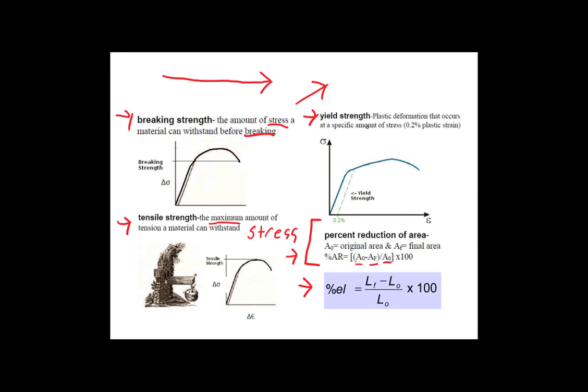Our next definition is yield strength. Now yield strength is plastic deformation that occurs at a specific amount of stress. So a lot of times you can't really tell when plastic deformation begins to occur in metals a lot of times. So what many engineers will do would be to find the strength at an arbitrarily picked percent strain. So most of the time it is 0.2 percent. Sometimes it's 0.1 percent. But either way, it's where you can see plastic deformation happening. So that's a pretty good general definition. Yield strength is generally where you can see plastic deformation happening.